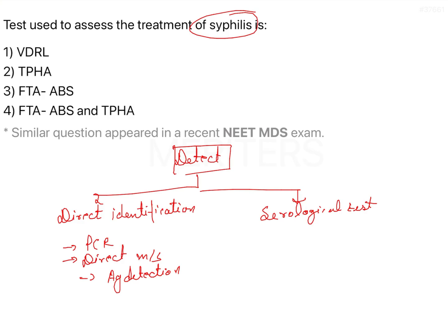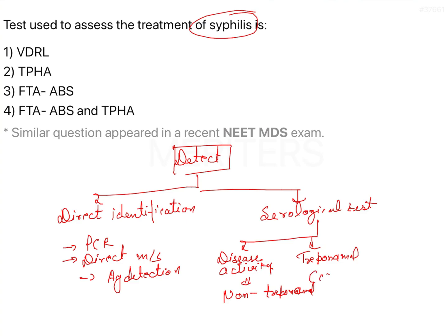Coming to the serological tests, there are non-treponemal tests for determining disease activity, and treponemal tests for disease confirmation. There can also be detection of Treponema IgM antibodies to detect early infection, because IgM antibodies indicate early infection.